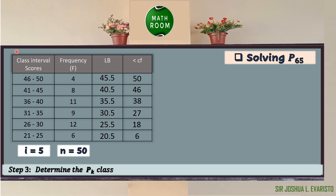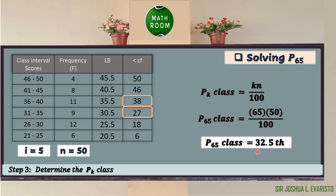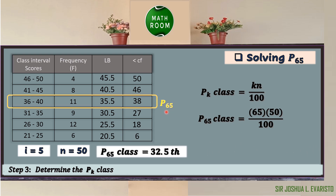Step three is to determine the P sub k class. The formula is: P sub k class equals k times n over 100. By substitution, P sub 65 class equals 65 times 50 all over 100. 65 times 50 equals 3250 divided by 100, which equals 32.5. Since 32.5 is between 27 and 38, we choose the higher value, which is 38. Hence, the P sub 65 class is found in the fourth class.